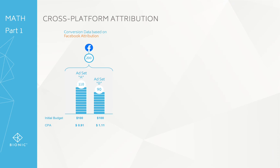You had an initial budget of $100 for the period, split evenly. You can then work out what your CPA is. What Facebook increasingly does with its campaign budget optimisation tool is shift more budget over time into Ad Set A, because clearly it's performing better — getting you more volume at a lower CPA.